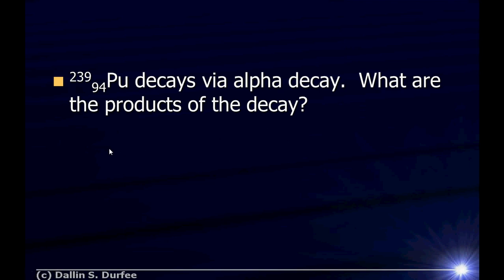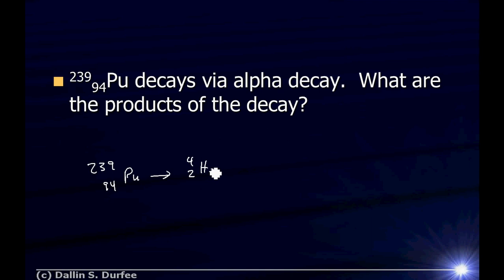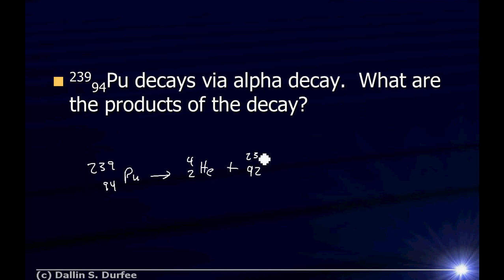In alpha decay, I start with my plutonium-239 and out pops an alpha particle. An alpha particle is basically the nucleus of a helium-4 atom. So I had two protons come out, which means what I'm left with behind is going to have two fewer protons. I also have two neutrons, for a total of four nucleons leaving, which means my atomic mass number is going to go down by four, so this is going to be 235.